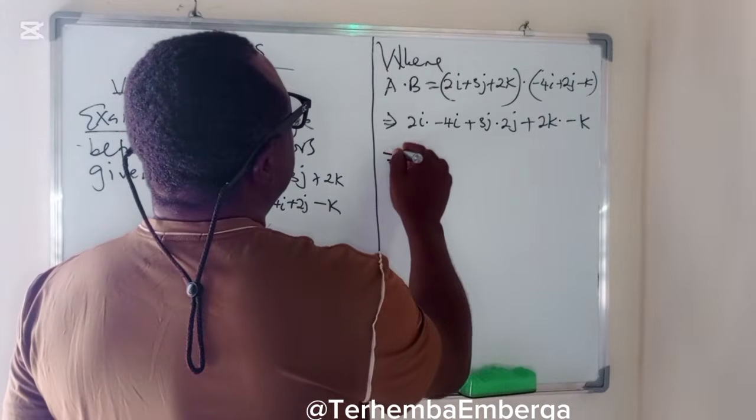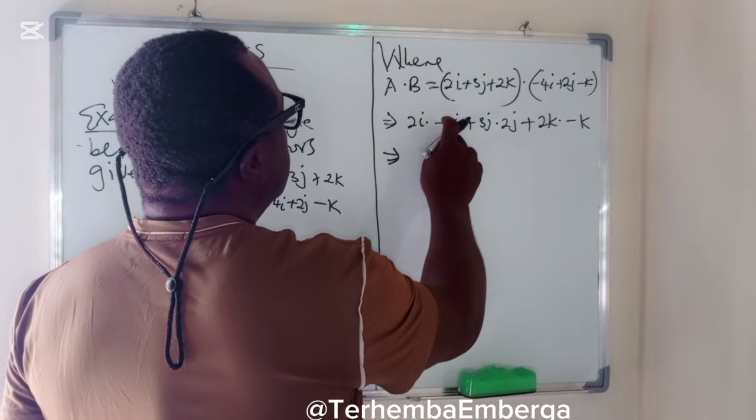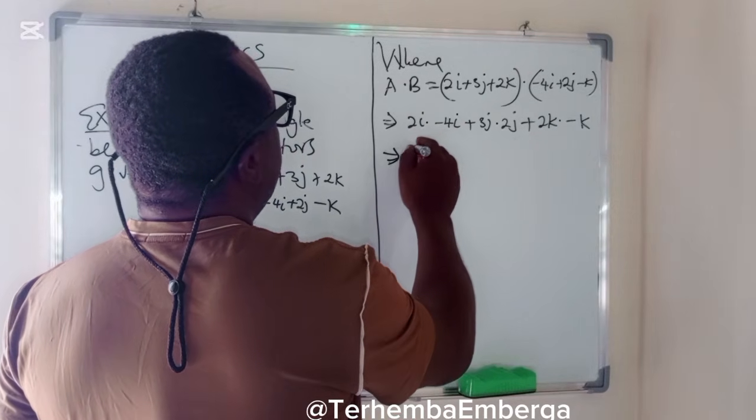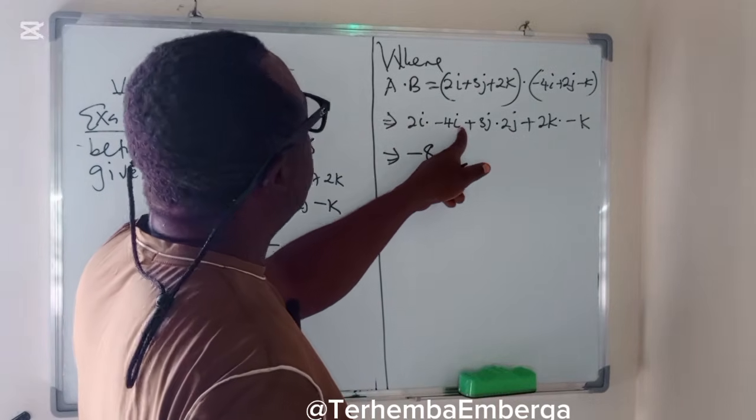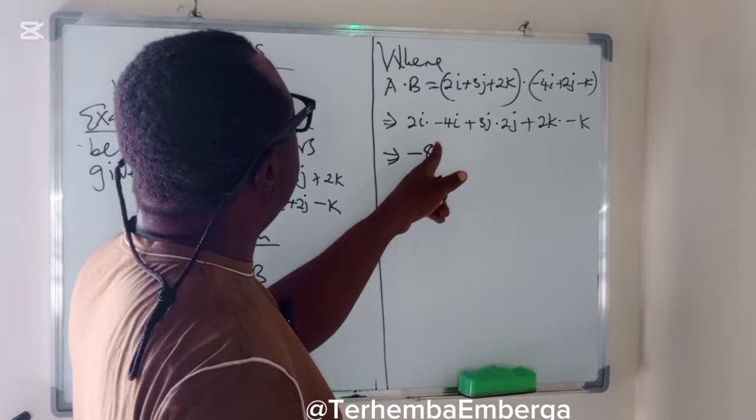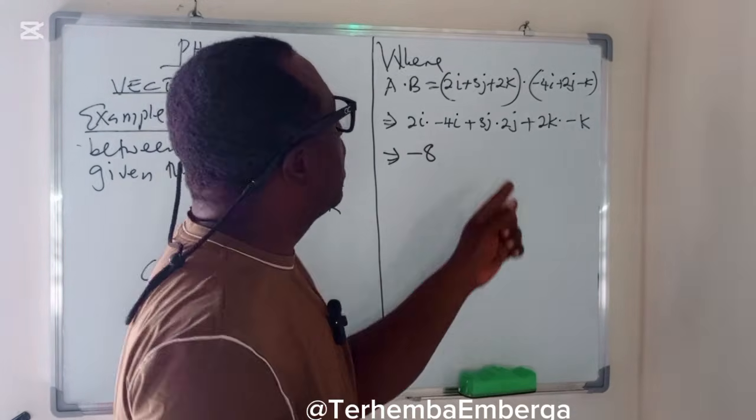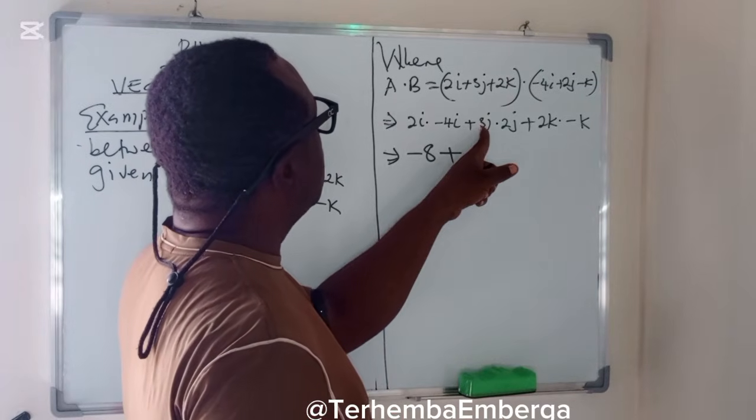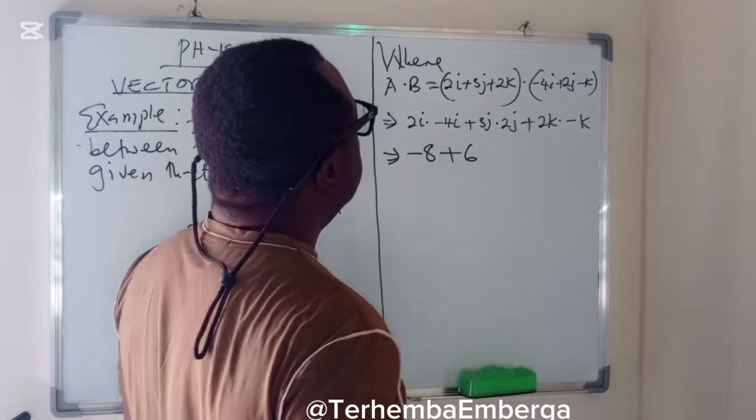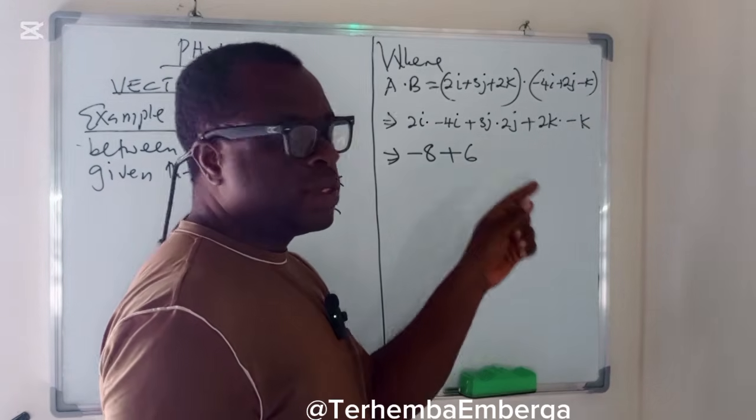So this becomes 2 times minus 4, which is minus 8. Then I dot I is 1, multiplied by this is minus 8. Then plus 3 times 2 is 6. The same way J dot J is 1, multiplied by that is 6.